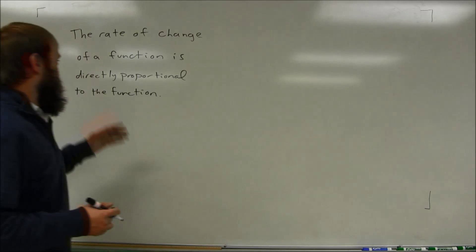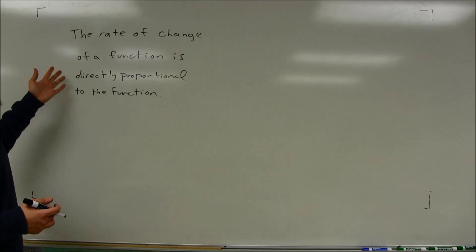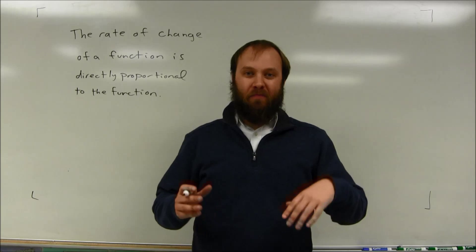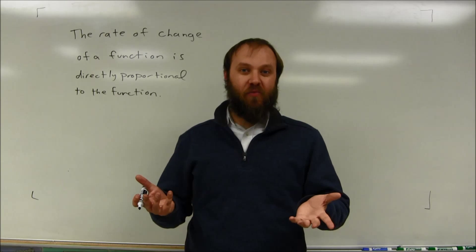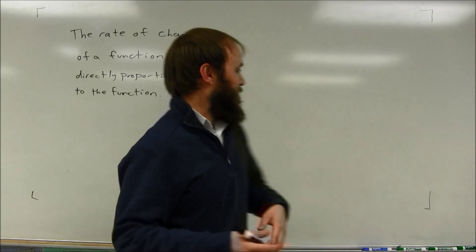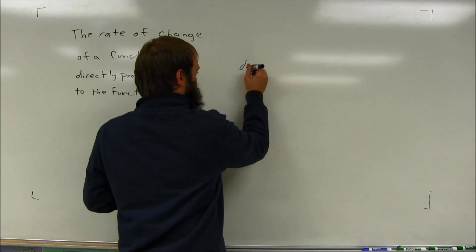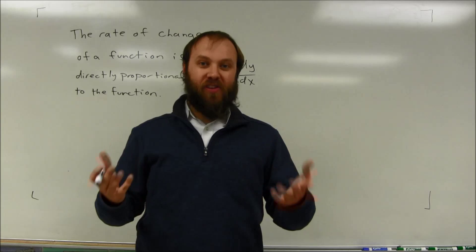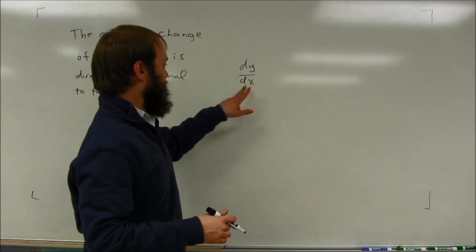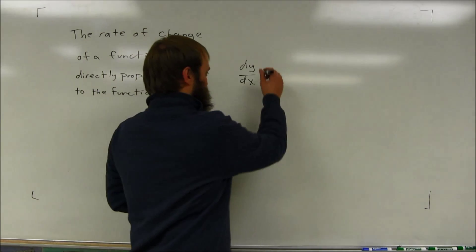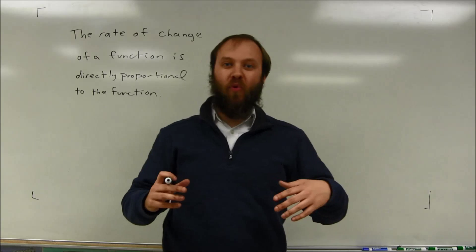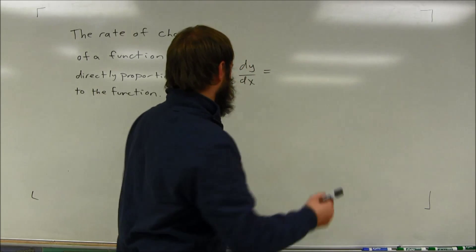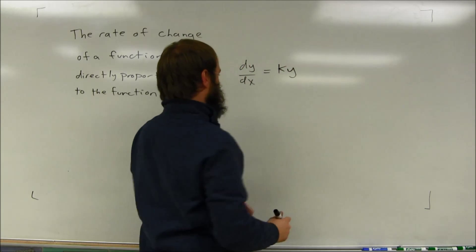As a quick review, we were working with functions where we had a rate of change of a function that was directly proportional to the function. The rate of change of a function is really just the derivative of that function. So we're saying that the derivative — maybe something like dy/dx, or in some of these problems maybe it was like dp/dt or some rate with respect to time — the rate of change of the function is directly proportional to the function. In other words, that function value y is getting multiplied by some kind of a constant. So we write that in the form dy/dx equals ky.